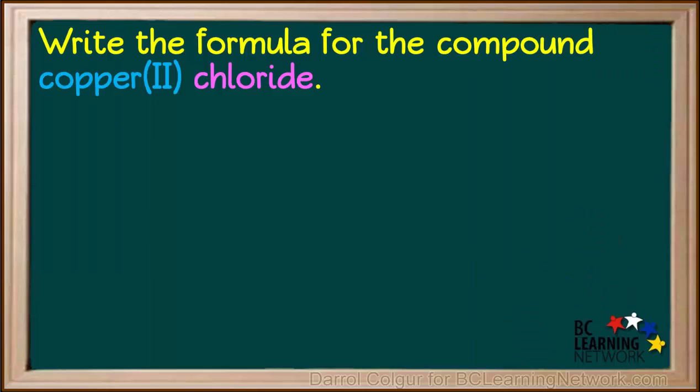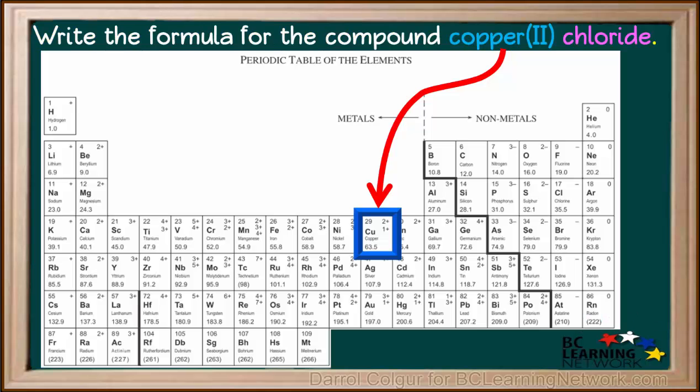In this example, we're asked to write the formula for the compound copper chloride. We find copper on the periodic table. It is a metal and it can form an ion with either a positive 2 charge or a positive 1 charge.